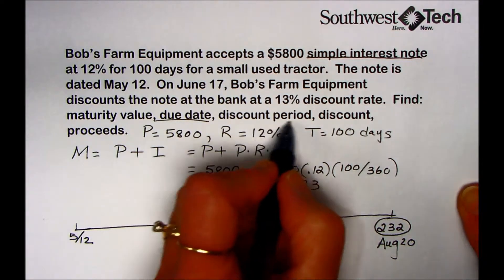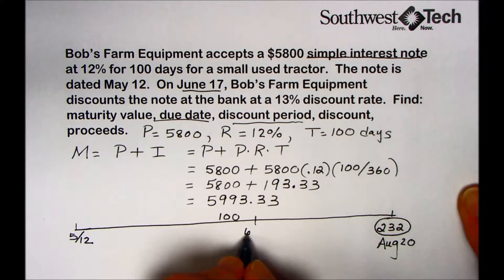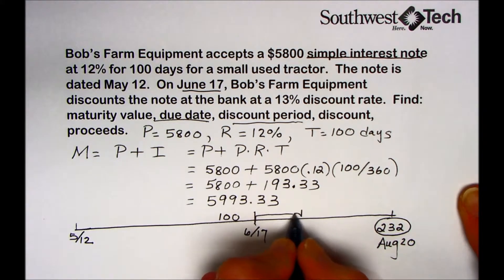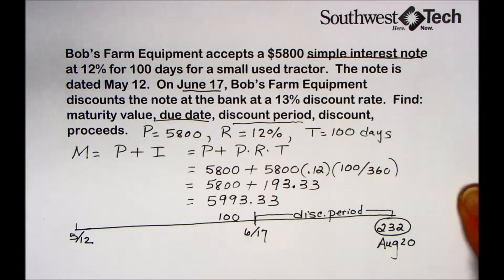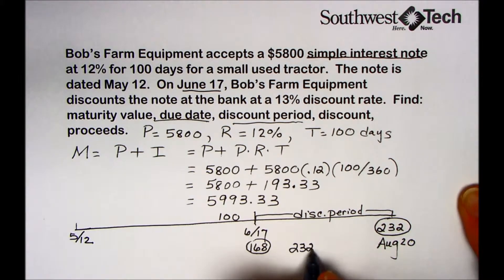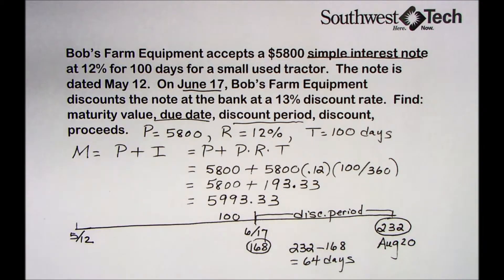Next, we're asked for the discount period. This is where Bob's Farm Equipment decides to sell this note to the bank, and they do so on June 17th. That starts the beginning of the discount period, which is the remaining time on the loan until it matures. Looking up June 17th, we find that's the 168th day, so the discount period is 232 minus 168, resulting in a difference of 64 days that the bank will hold this until it matures.